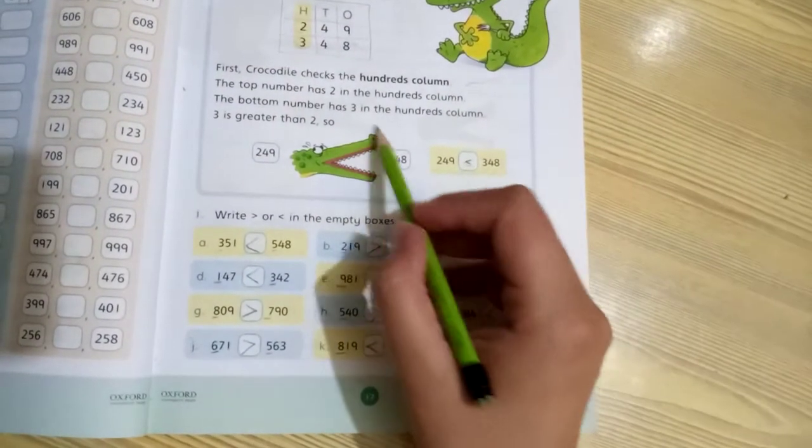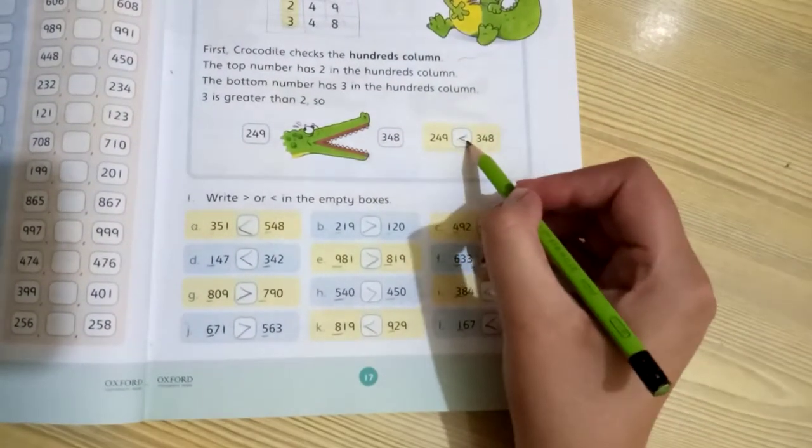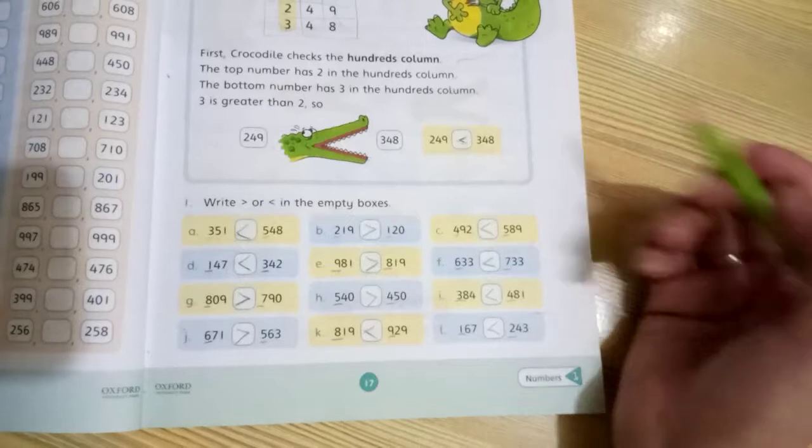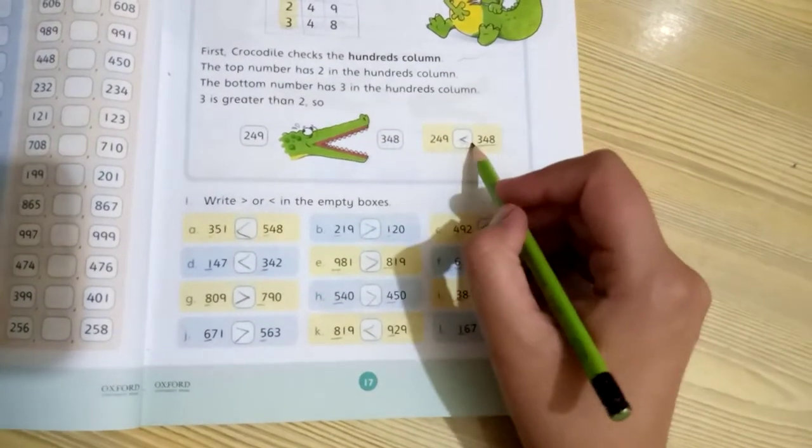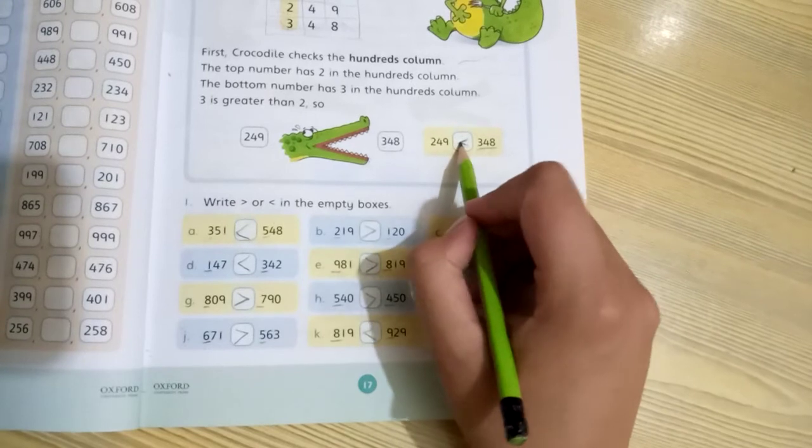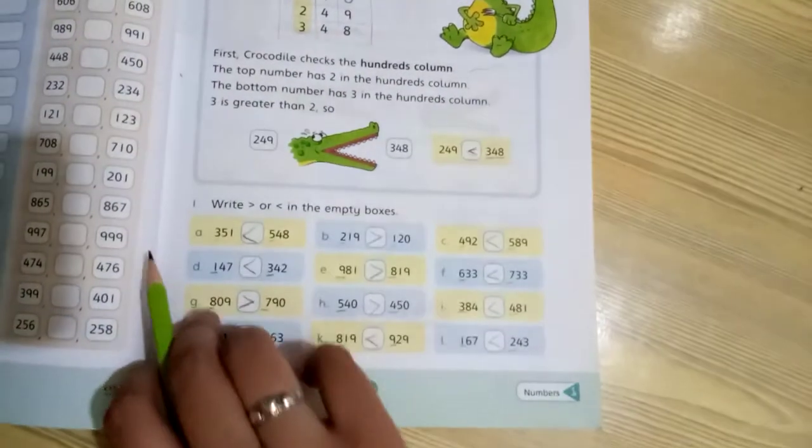Now you can see, the whole answer looks like the crocodile's face. We have the greater than sign like this line, 348 ki taraf open. So this closed side represents smaller and the open side represents greater, understand?